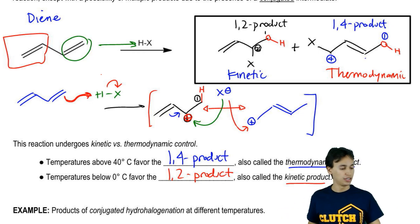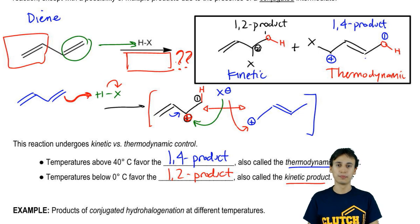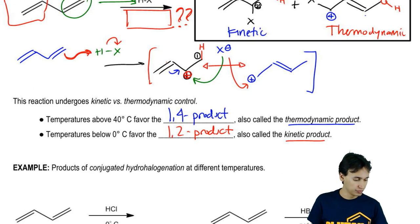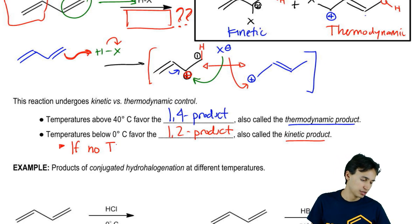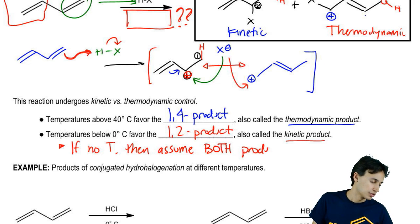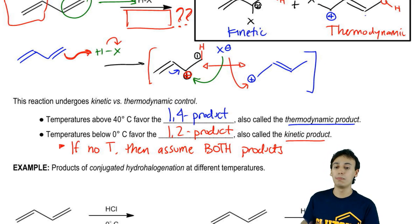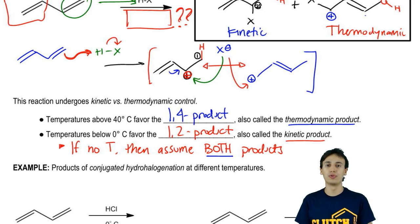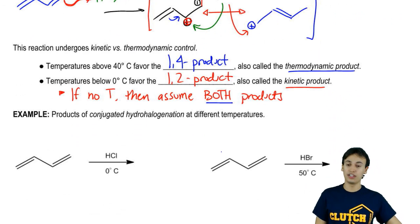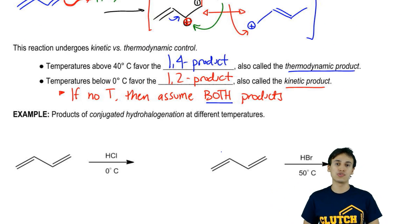Notice that in the original reaction, no temperature was given. If your professor doesn't give you a temperature, don't assume 1,4 or 1,2. If there's no temperature, assume both products — a mixture. It's probably somewhere between 0 and 40°C, so you get no thermodynamic or kinetic control. Now go ahead and try to draw the products of the first practice problem, then I'll explain it.